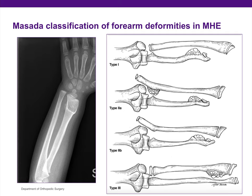In young patients who have MHE, many deformities can occur and have been well described by the Masada classification, divided into three groups. Type 1: distal ulna osteochondroma with relative shortening, radiocapitellar joint reduced. Type 2A and 2B: radiocapitellar joint is dislocated — in Type 2A there is also a proximal radius osteochondroma, in Type 2B there is none. Type 3: osteochondroma in the distal radius with relative shortening of the distal radius, as represented in the X-ray shown.